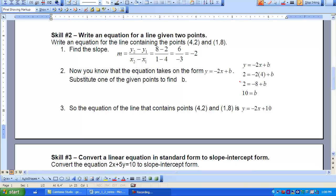So now I can plug those two things into my equation. Negative 2 for M. 10 for B. And I get the equation Y equals negative 2X plus 10. So the equation for my line containing the (4,2) and (1,8) is Y equals negative 2X plus 10.